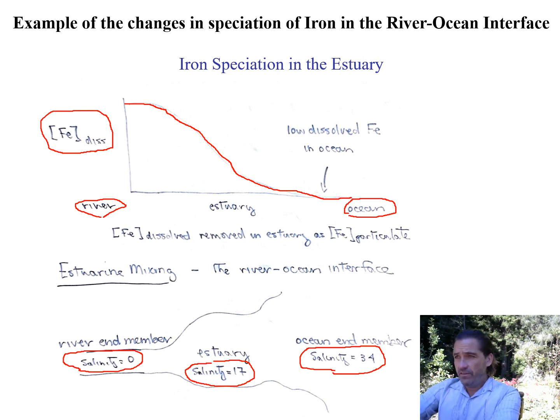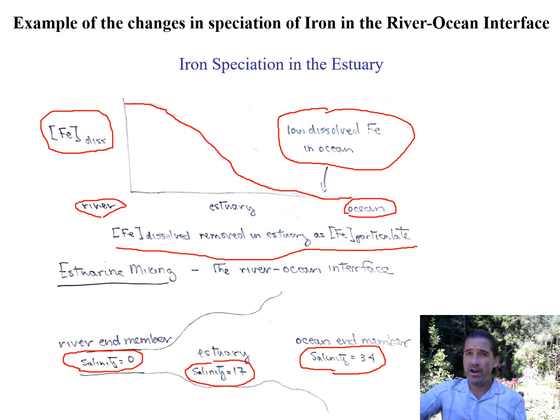So in the estuary, as we change salinity, what we find is that the dissolved iron is removed in the estuary and turns into particulate iron and drops into the sediments. And what that gives us is a very low concentration of dissolved iron in the ocean. And this is a very important part of the ocean ecosystem.